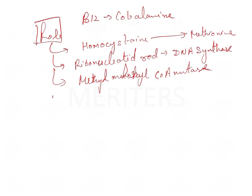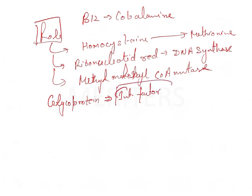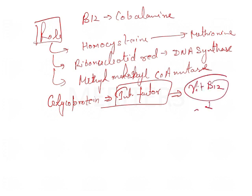There is a glycoprotein also known as Castle's intrinsic factor. This intrinsic factor is biochemically a glycoprotein and is important for the absorption of Vitamin B12. That is why we also call Vitamin B12 the extrinsic factor.